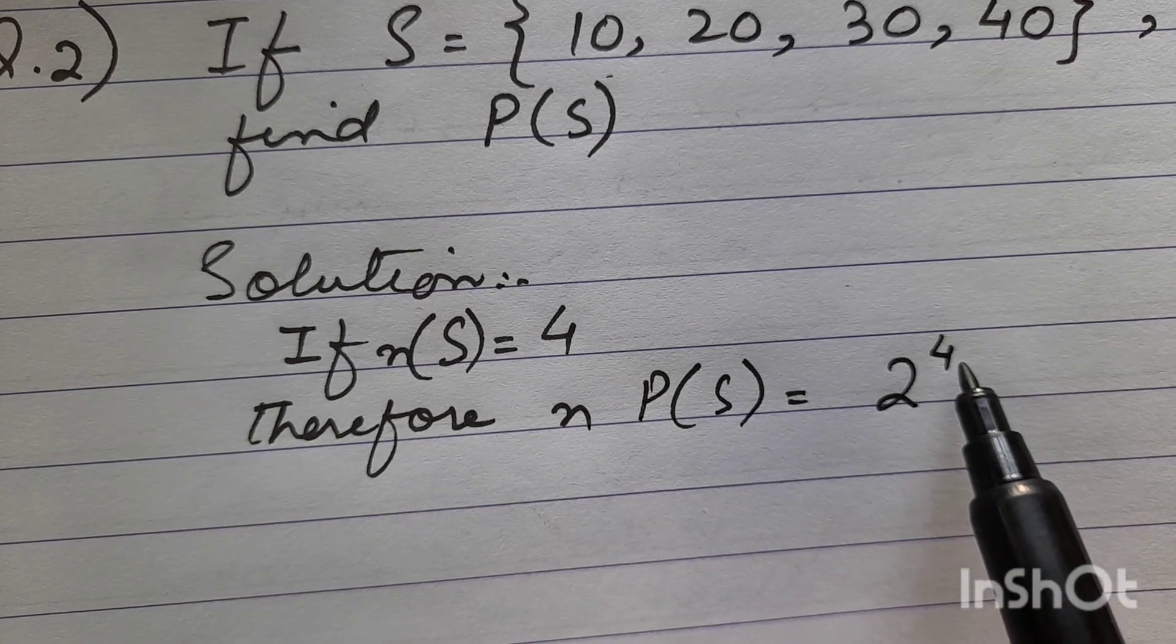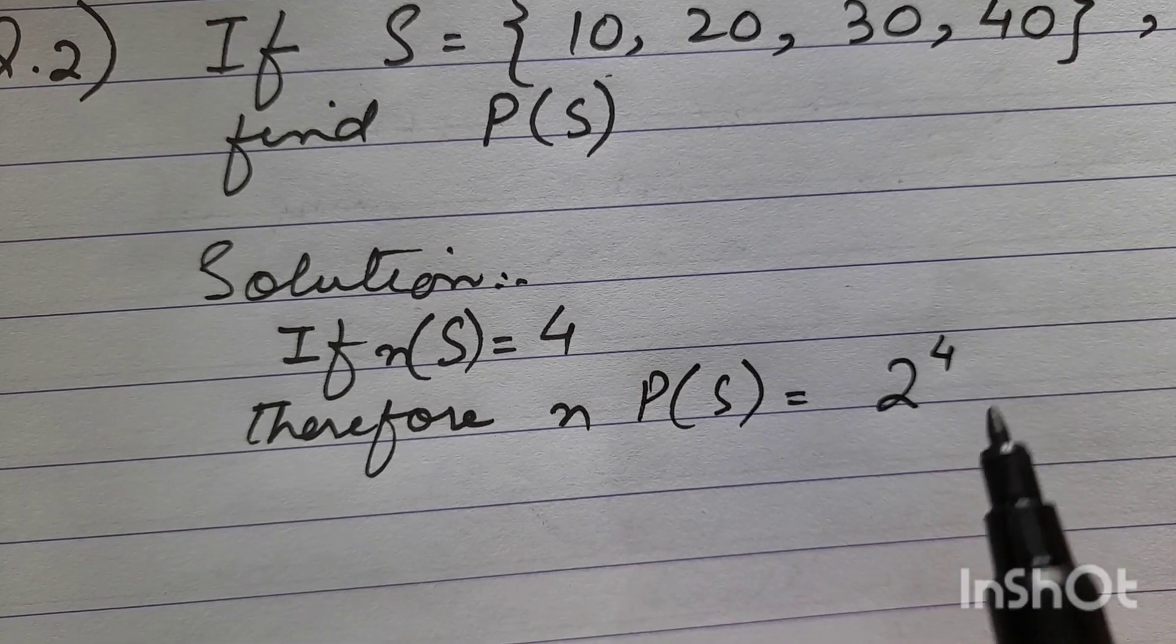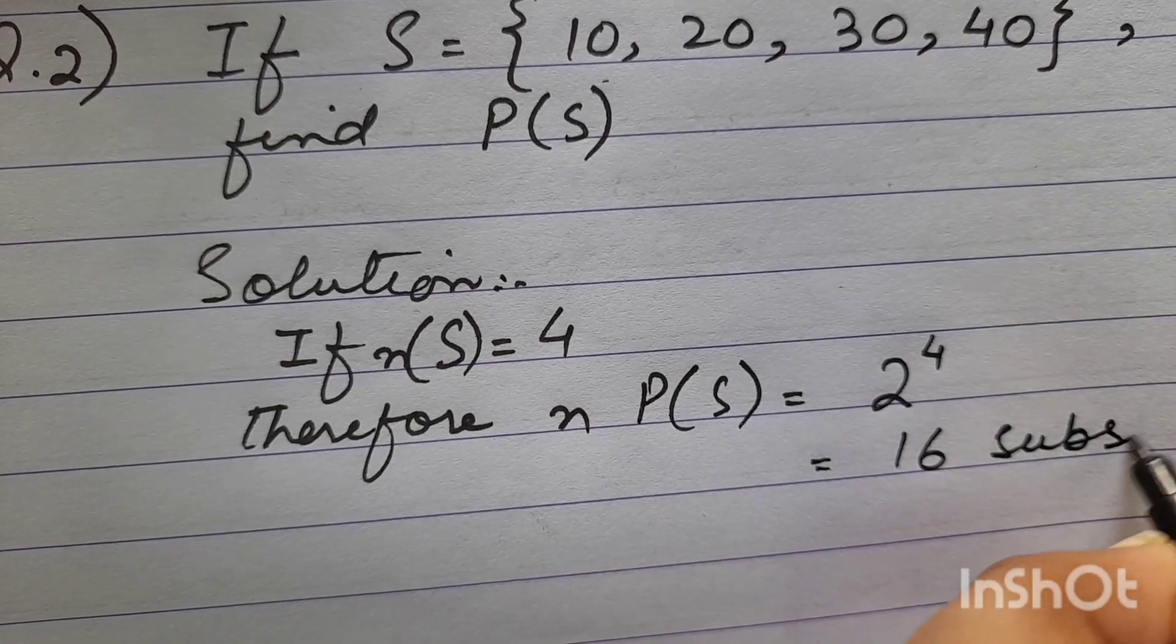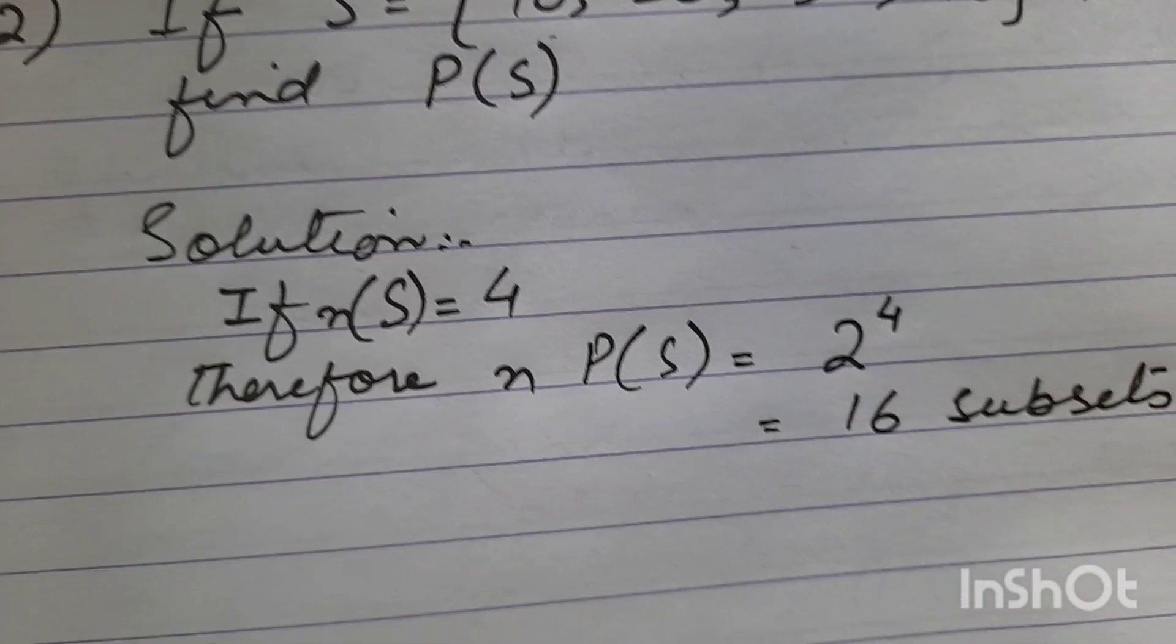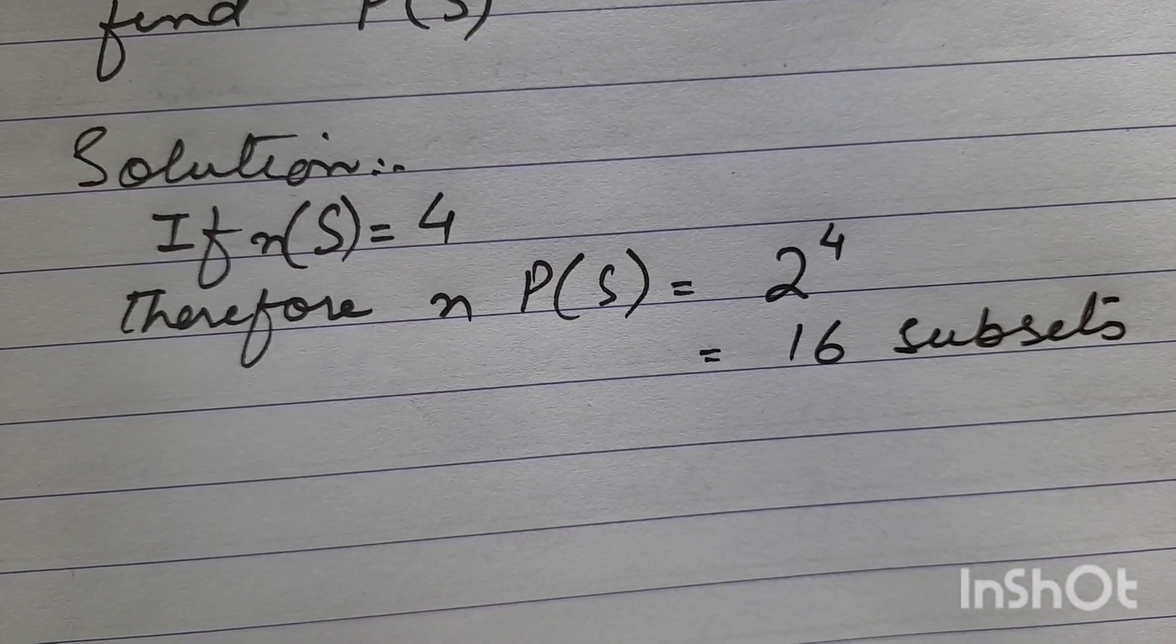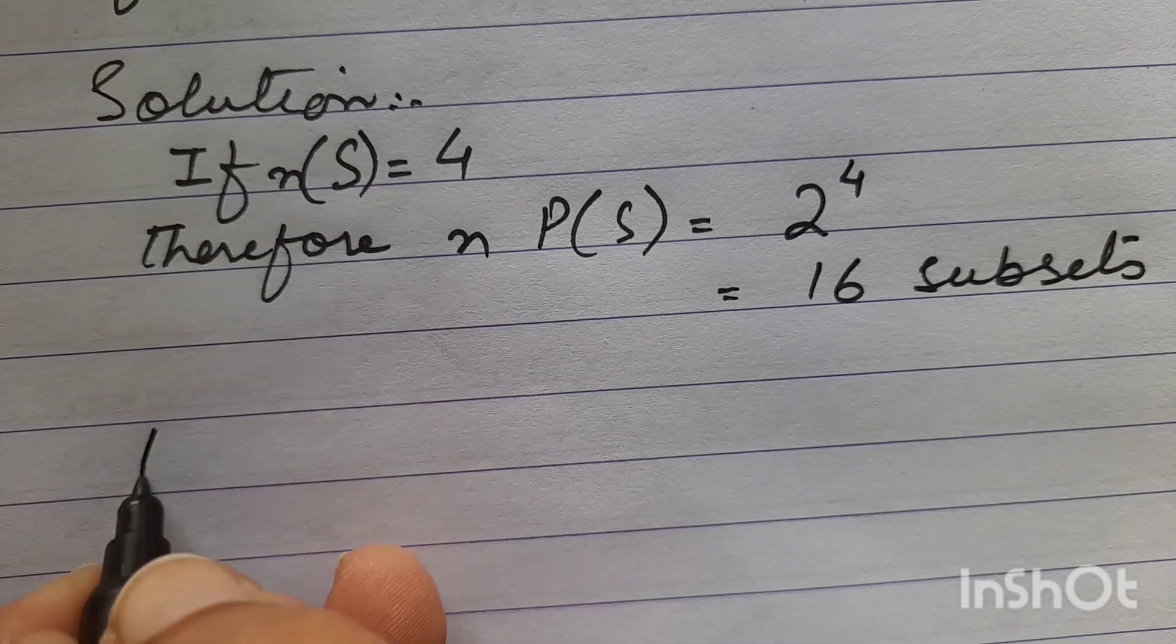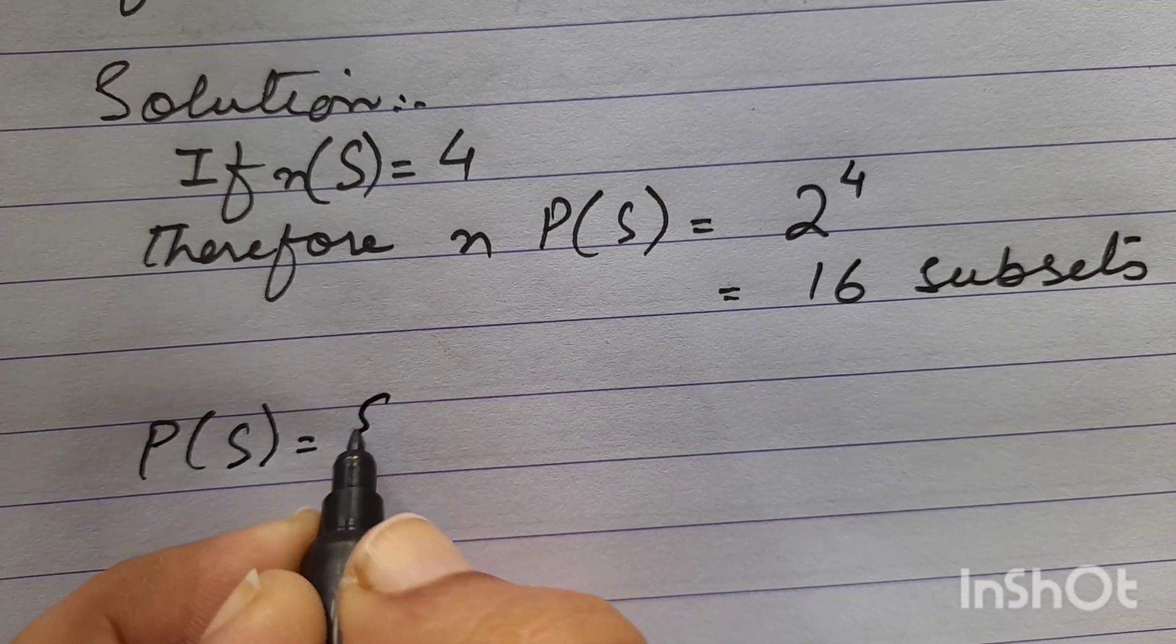The number of elements you have, that will be the power of this 2, and it will become 16 subsets. Okay, so you have a total of 16 subsets that will form. Let's make it.